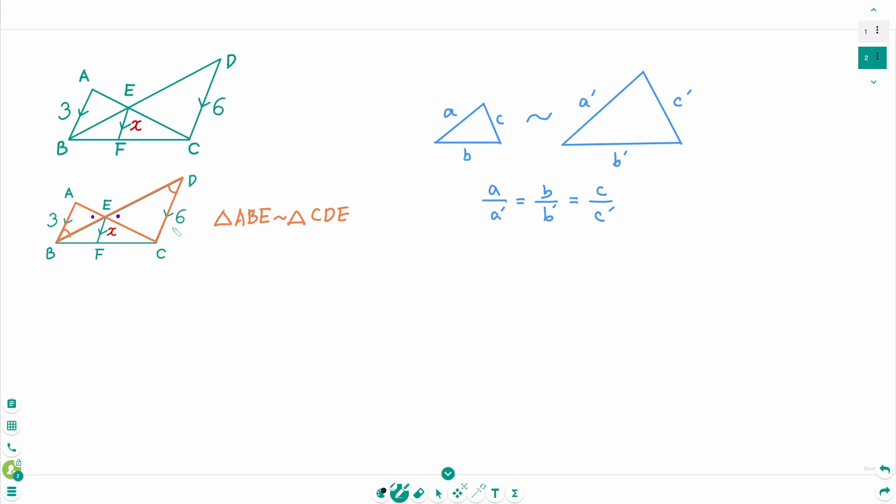In here AB to DC is 3 to 6, which means BE to ED is also 3 to 6. So BE to DE equals 3 to 6, we can simplify to 1 to 2. And now BE to ED is 1 to 2.